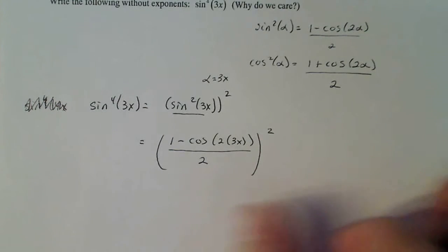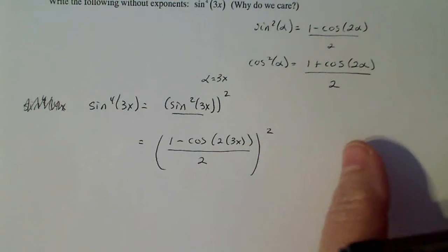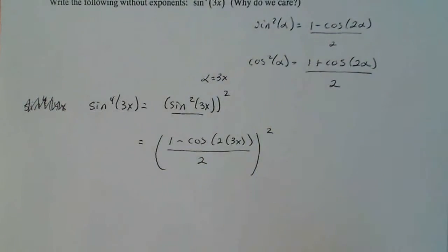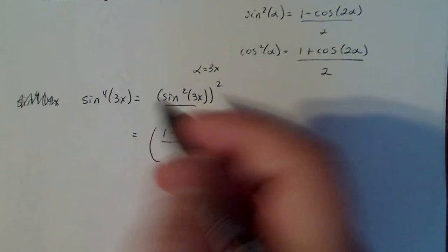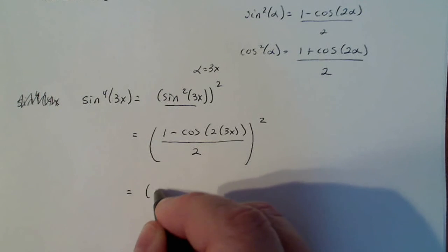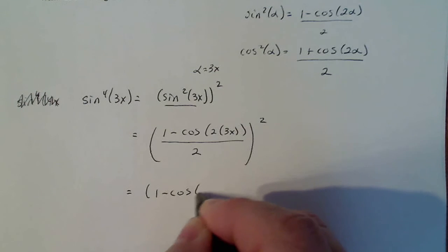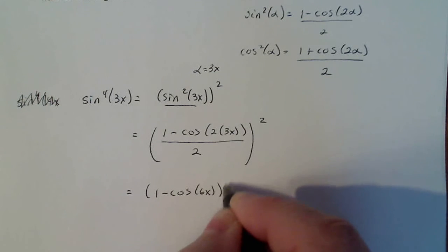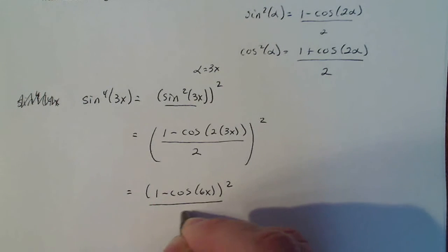A lot of this, in this problem, like I said earlier, is going to be some algebra. So here's the start of the algebra. I'm actually going to square both the numerator and the denominator: 1 minus cosine 6x quantity squared divided by 2 squared.